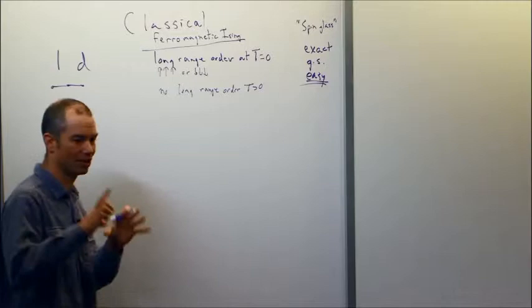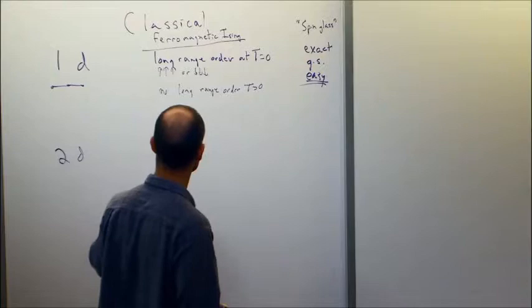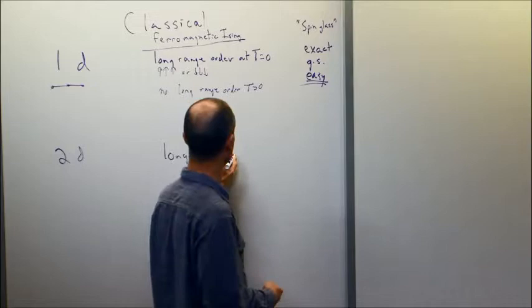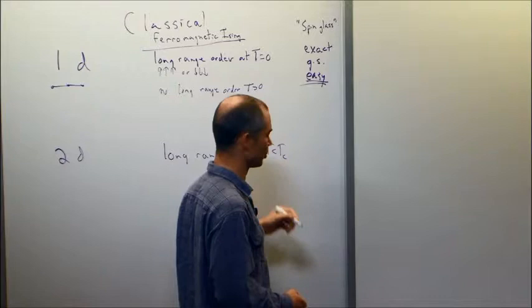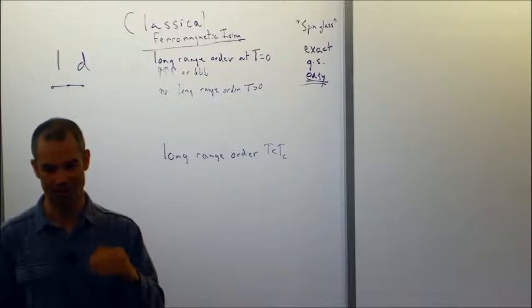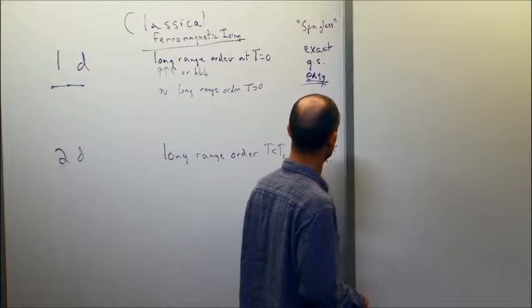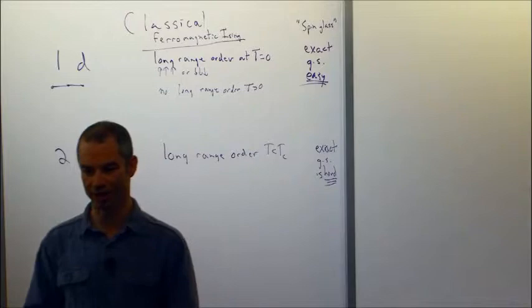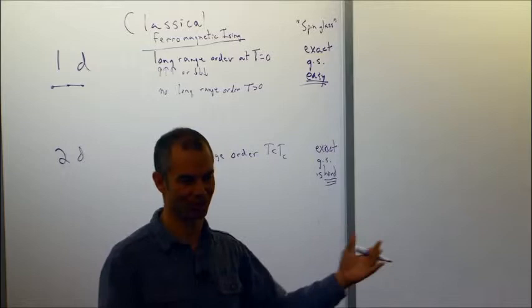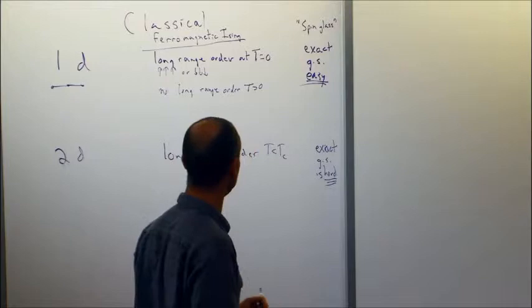Now let's go to 2D — what happens when we go to two dimensions on a square lattice. If you consider the ferromagnetic Ising model on a square lattice, there's actually long-range order in thermal equilibrium for temperatures T less than some critical temperature, and this critical temperature is strictly greater than zero. So there's really some temperature at which a phase transition happens. But now finding the exact ground state is hard — it's NP-hard to find the exact ground state if you have arbitrary interactions on a 2D square lattice.